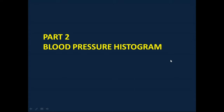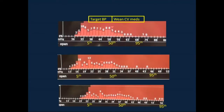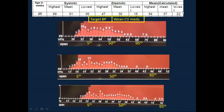In part 2, we will discuss blood pressure histograms briefly. You have three blood pressure histograms: systolic, diastolic, and mean blood pressure. For this infant, who was 25 weeks gestational age, we have from our tables the highest, mean, and lowest blood pressure for each parameter — systolic, diastolic, and mean.